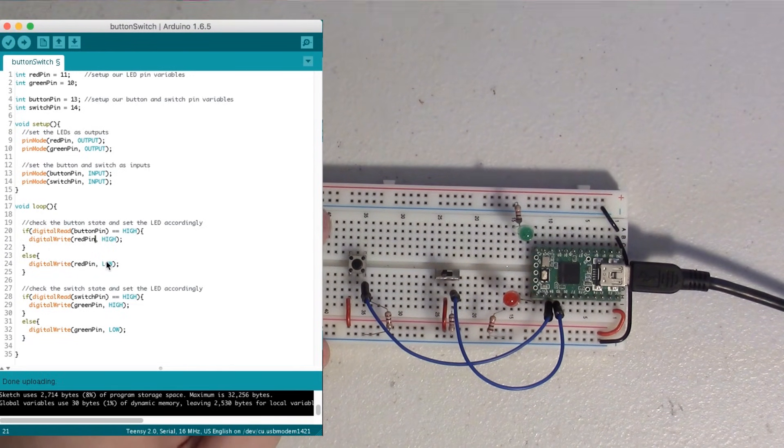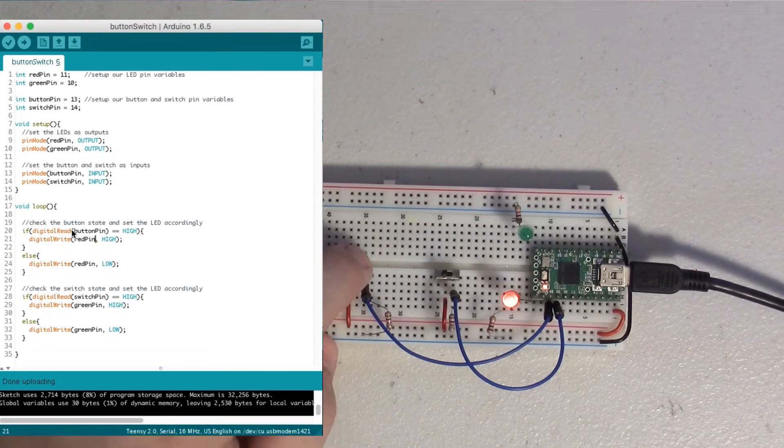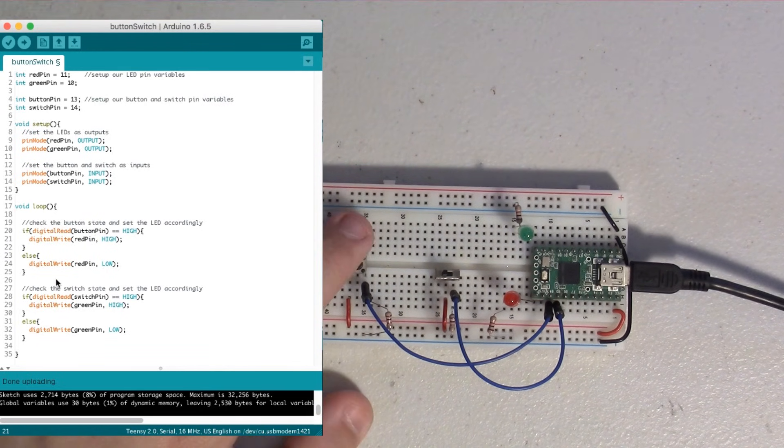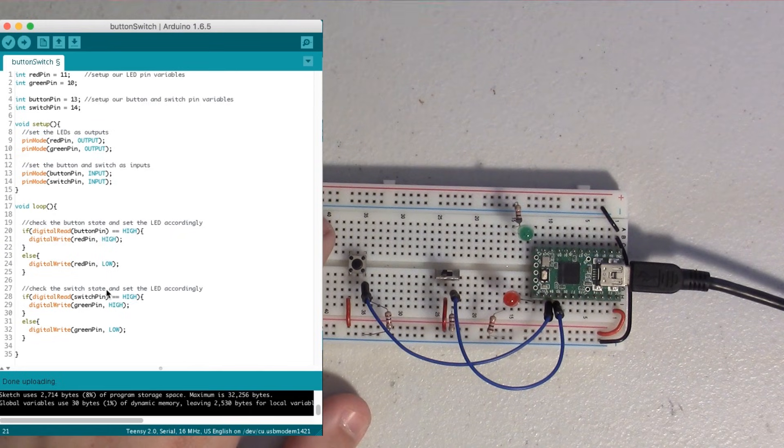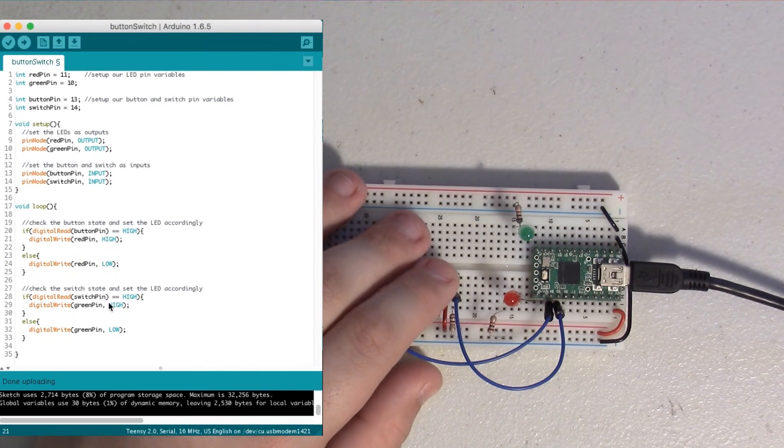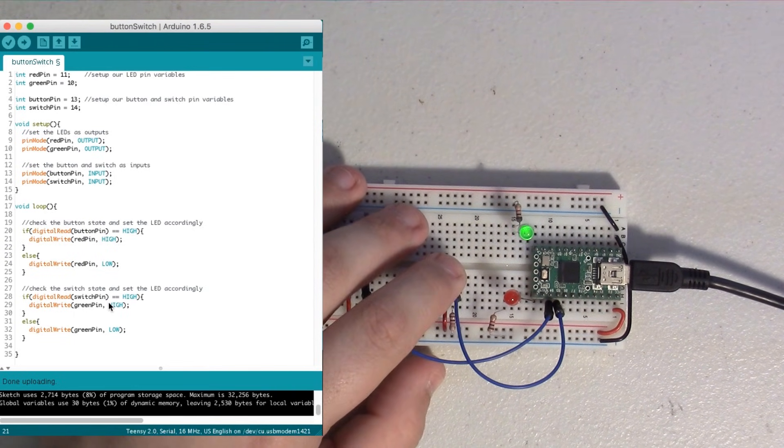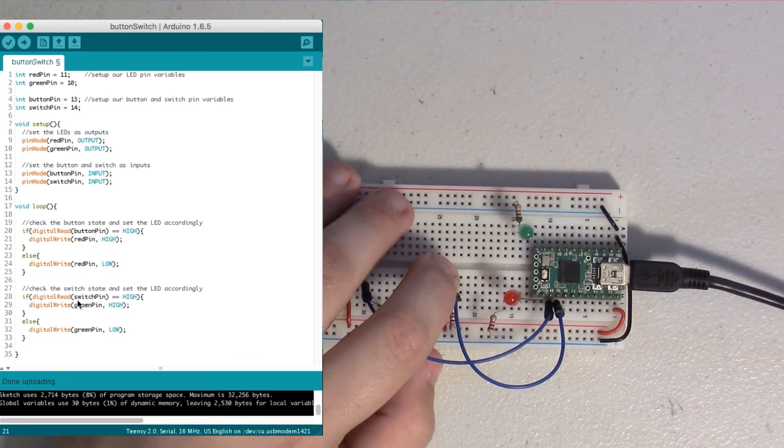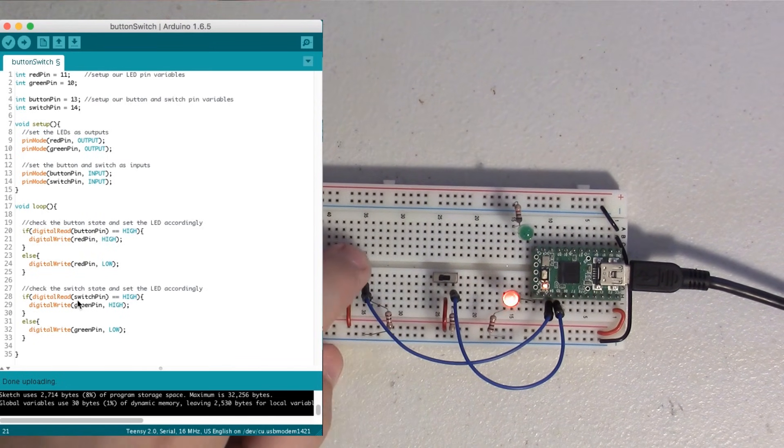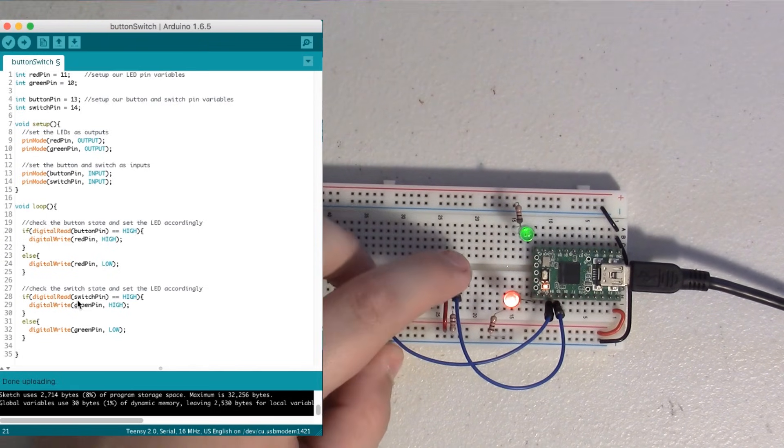And the else statement is what turns it off. So if it's high, then we turn the LED on, but else, which is basically otherwise, turn it off. And now the switch here is the exact same thing. We're going to read and see if the switch pin is high, and if it is, we turn the green pin on, and if it's not, we turn the green pin off. So, on, off. And we can do both at once, do whatever we want. It's a very simple little program here.